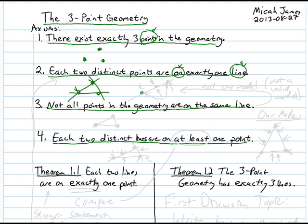This is a perfectly good model so far, but one thing not yet ruled out is the idea that maybe one line contains all three points — where the same line is the one containing each pair of points. Without further information we don't know which holds, but axiom 3 says not all points are on the same line, which rules out that single-line model.